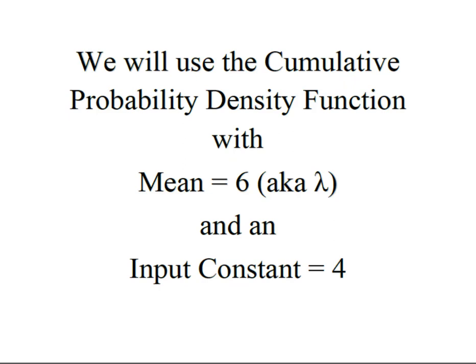In order to solve we're going to use the cumulative probability density function in Minitab and our mean or lambda is still six. But now we're going to have to use an input constant of four because I want four or fewer and so I want four included in that cumulative probability.